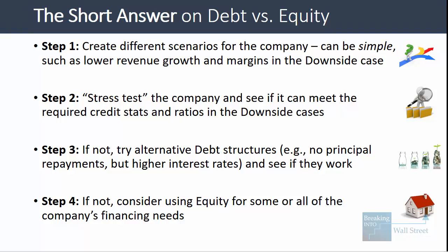If none of that works, then you have to resort to equity, which is almost always going to be more expensive than debt for some or all of the company's financing needs. You don't necessarily want to say the company cannot afford debt, therefore it should use 100% equity. It might be a combination of debt and equity that works best, but you will probably have to use some equity if you cannot get the credit stats and ratios to work in the downside cases, regardless of the type of debt being used.